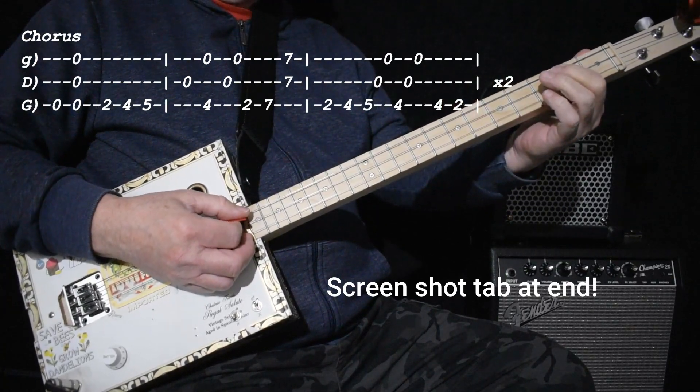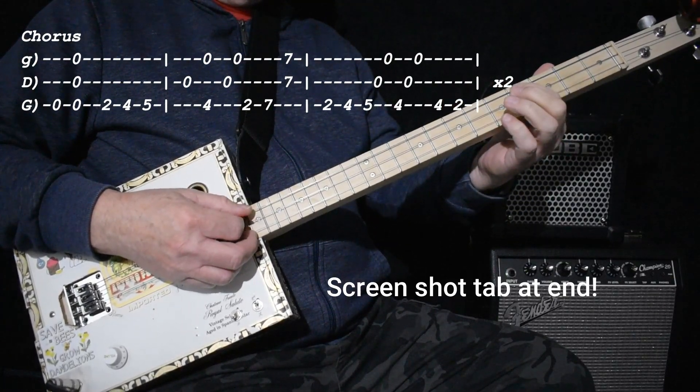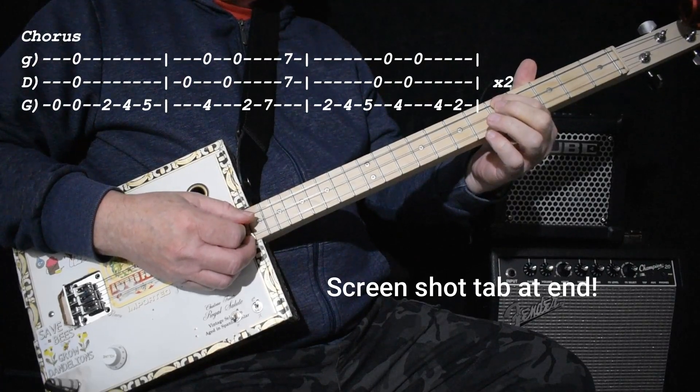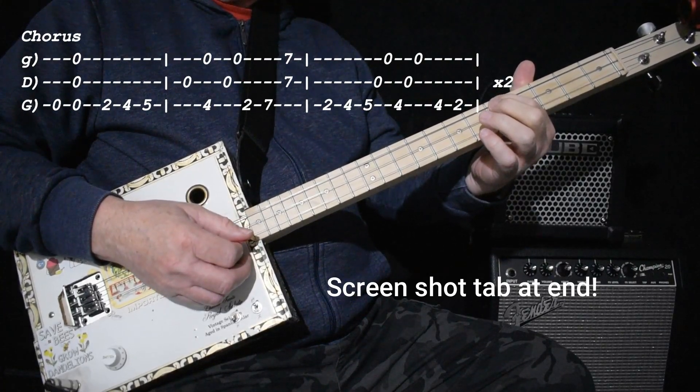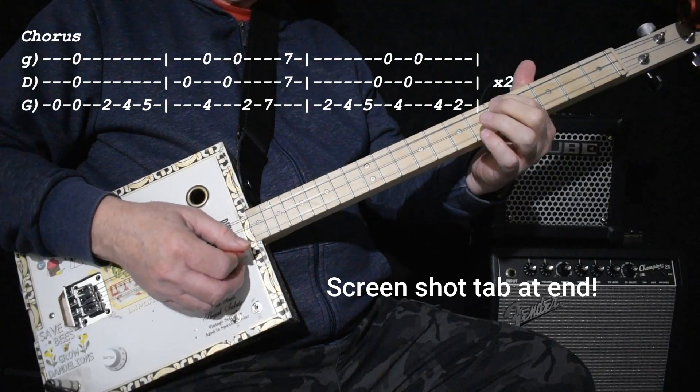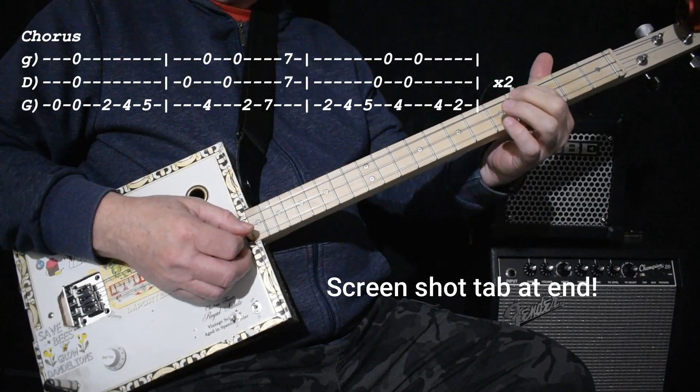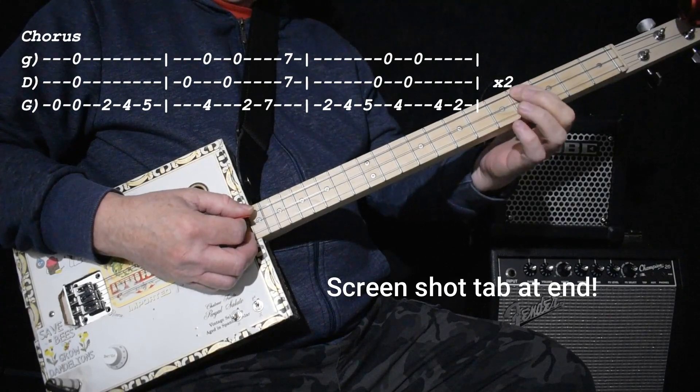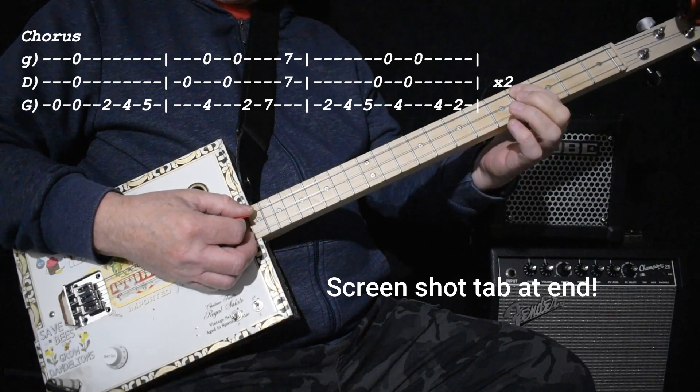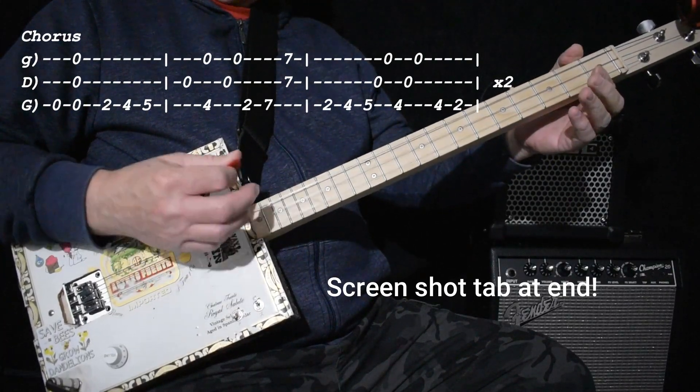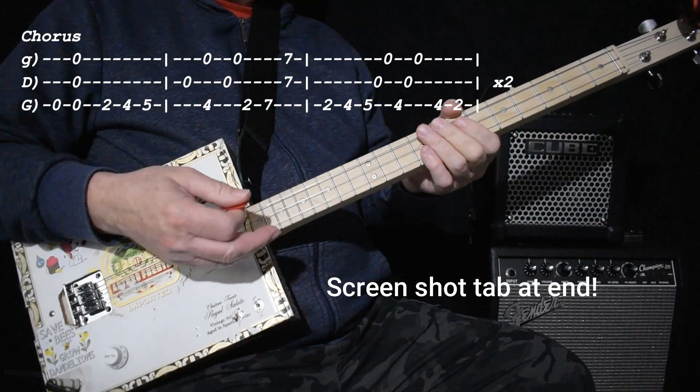Okay, and then that goes back down to two, four, five, open middle, open high again. [plays] Four, open middle, open high. And then it goes four, two, open. [demonstrates]